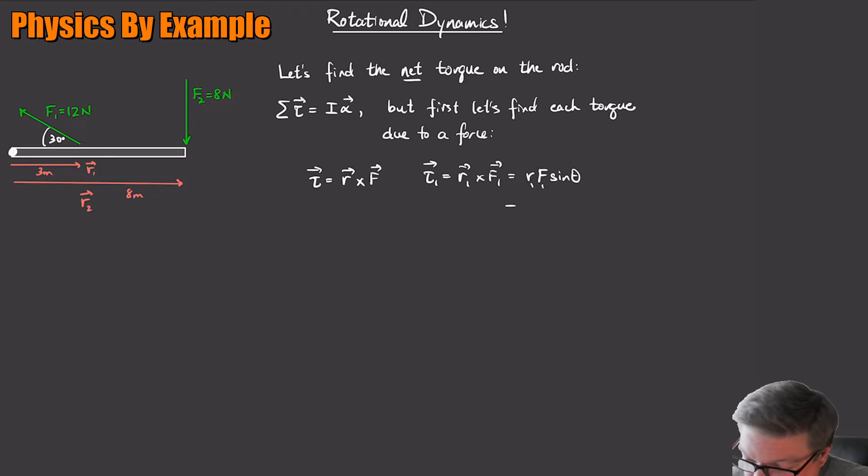Okay, so R1, the magnitude of R1 is 3. The magnitude of F1 is 12. And then sine theta. Let me draw it over here. R1 is pointed that way, and F1 is pointed that way. So what's the angle between the vectors? How we find that, let me draw it better. How we find that is make them, remember you can slide vectors around. So make them start in the same place. So here's my R1 and then my F1 is going back like that.